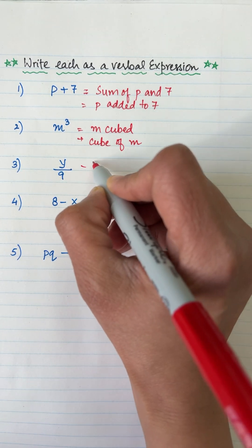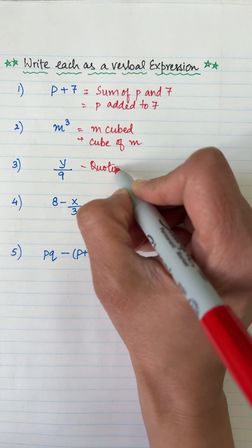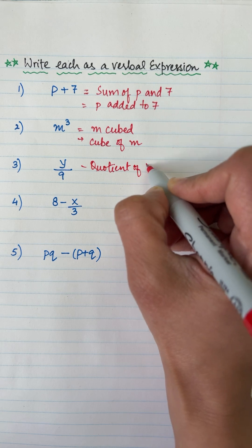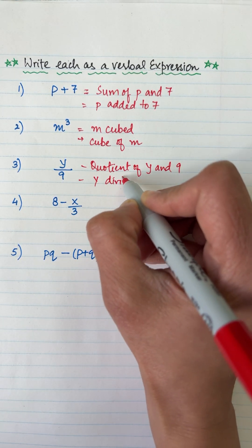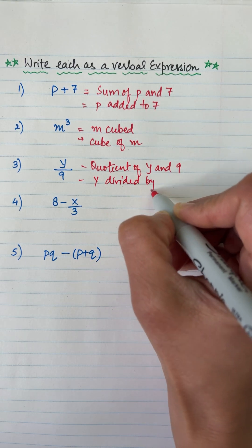Y over 9, the quotient of y and 9. You want to write it as y divided by 9, that is also correct.